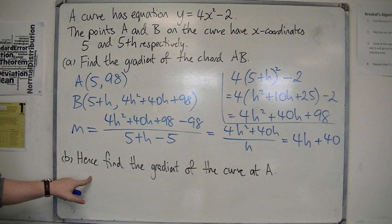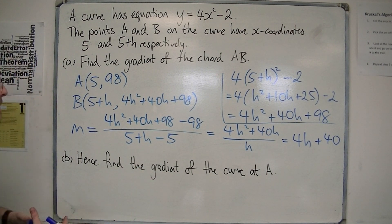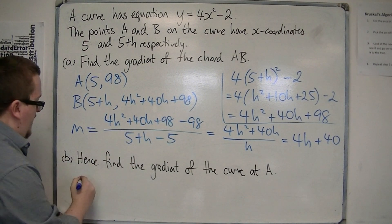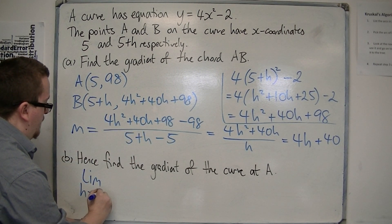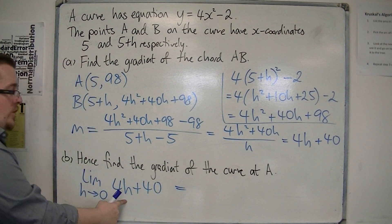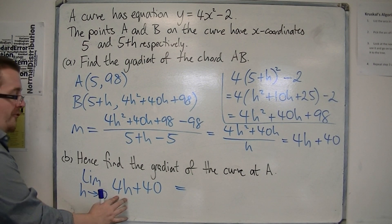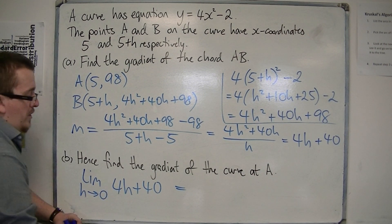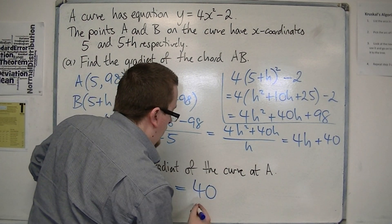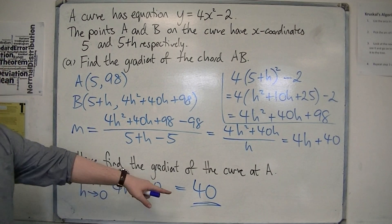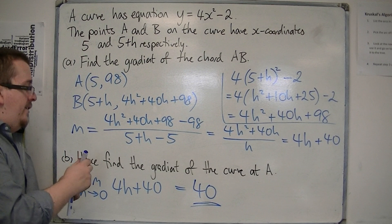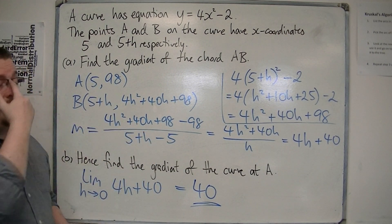So part B: hence find the gradient of the curve at A. Well, that will be equal to 4h plus 40, when h is tending towards 0. And as h gets smaller and smaller and smaller, 4h gets smaller and smaller and smaller, to the point where I am just left with 40. And so the gradient of the curve at A will be 40. And this is how we can use differentiation from first principles in order to show it.